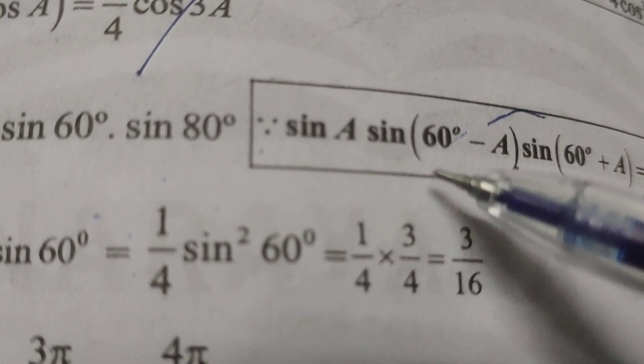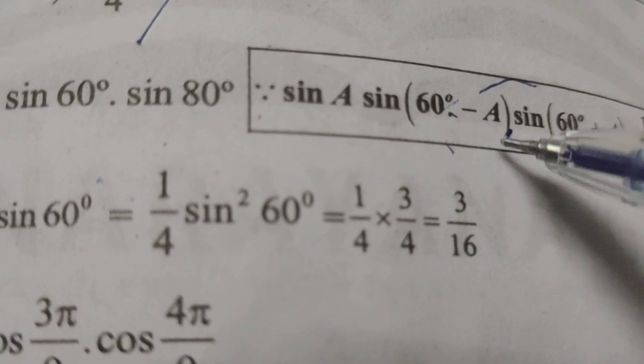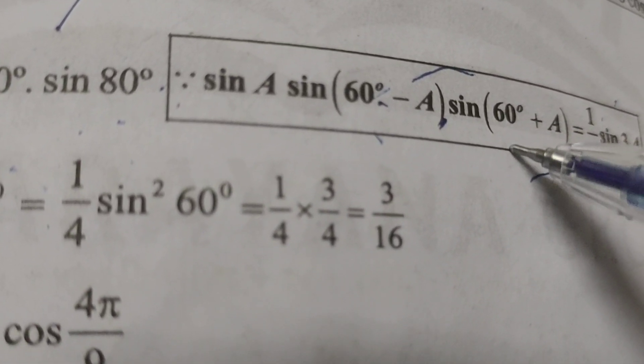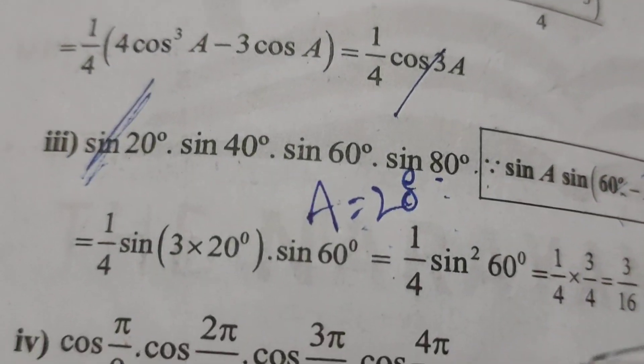Here I write sin 40° as sin(60° - 20°), and sin 80° as sin(60° + 20°). Let us consider A equals 20 degrees.